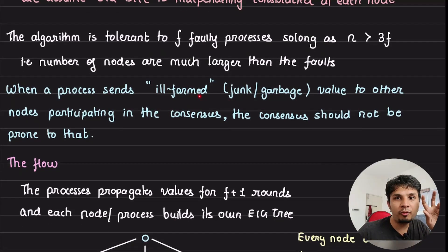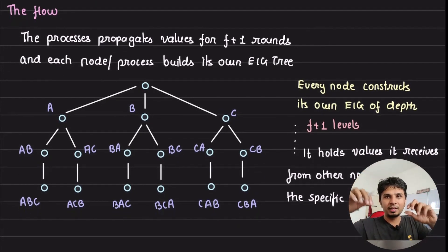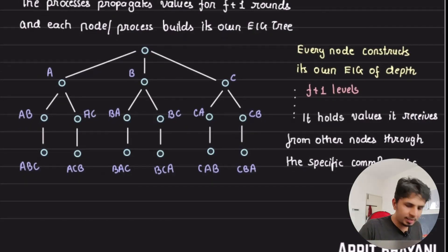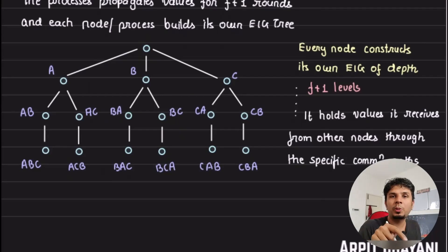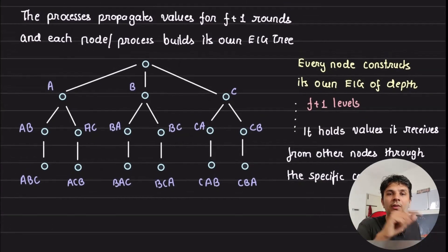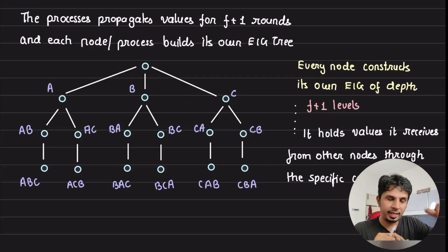When a process sends ill-formed information — maybe some junk or garbage value — to other nodes participating in the consensus, the consensus should not be prone to that. The process propagates the value for F plus 1 rounds, and each node builds its own EIG tree independently. Every node is constructing its own EIG tree independently for F plus 1 levels, and the value it receives will be put into the corresponding path — like a trie. Construction is covered in the previous video, but the idea is sending the value to nodes along the path at level K minus 1 such that you are not in that path, covering the permutations.